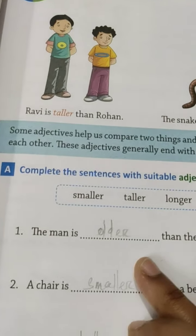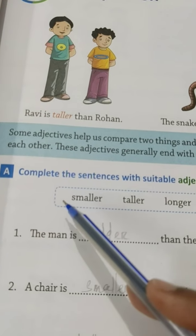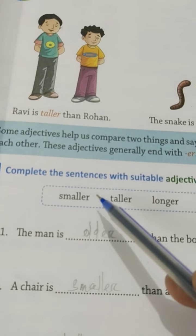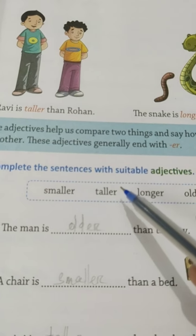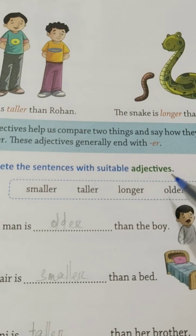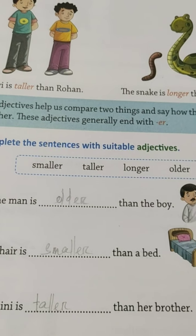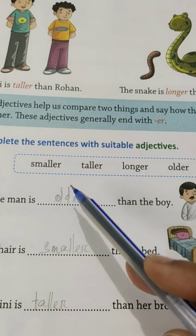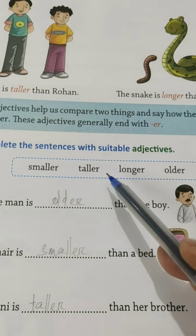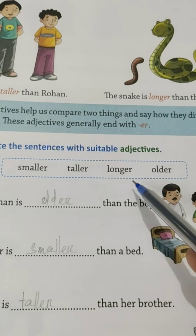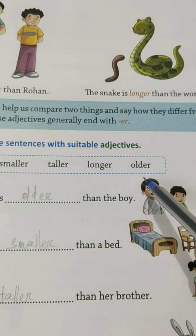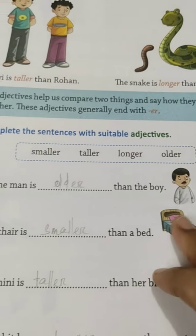Now we will see Exercise A: Complete the sentences with suitable adjectives. Options are given here — smaller, taller, longer, and older.